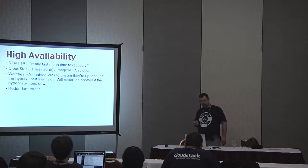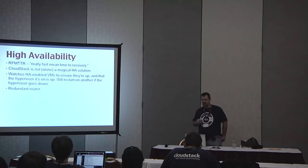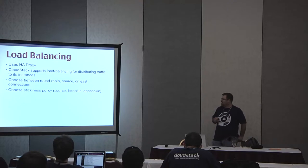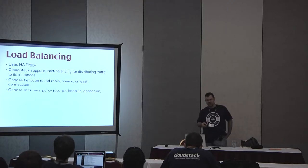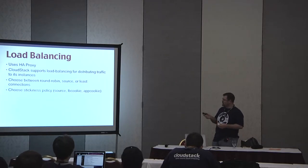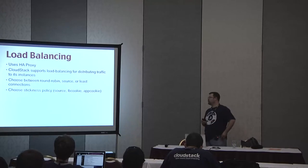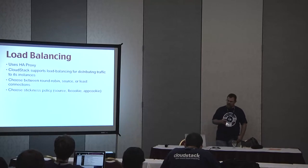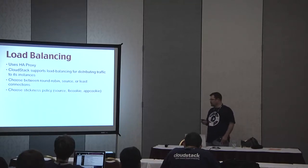High availability supports very fast mean time to recovery — it watches HA-enabled VMs to make sure they're up and spins them back up if they fall over. We also support redundant routers so if a machine running a software router falls over, it will fail over automatically. Load balancing uses HAProxy — you can spin up multiple instances and set up load balancing between them, choosing between round-robin, source, or least-connection, and setting stickiness policy: source, LB cookie, or app cookie.